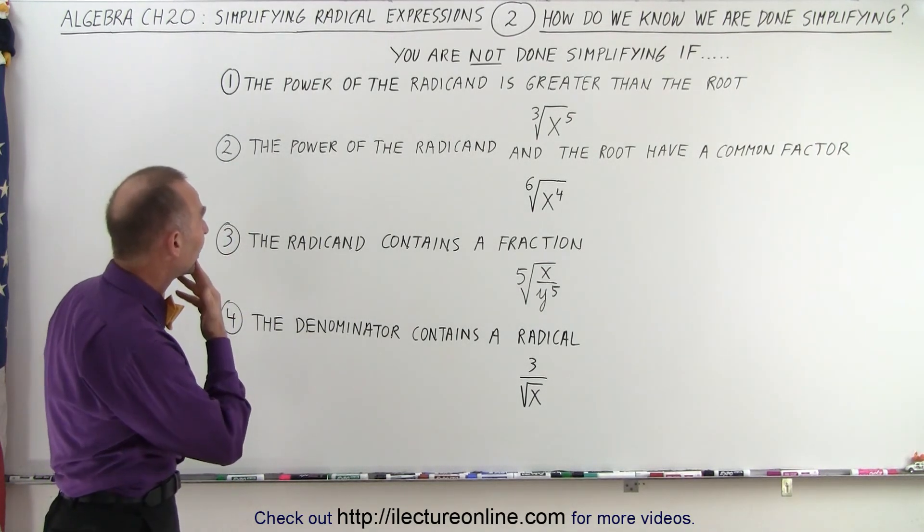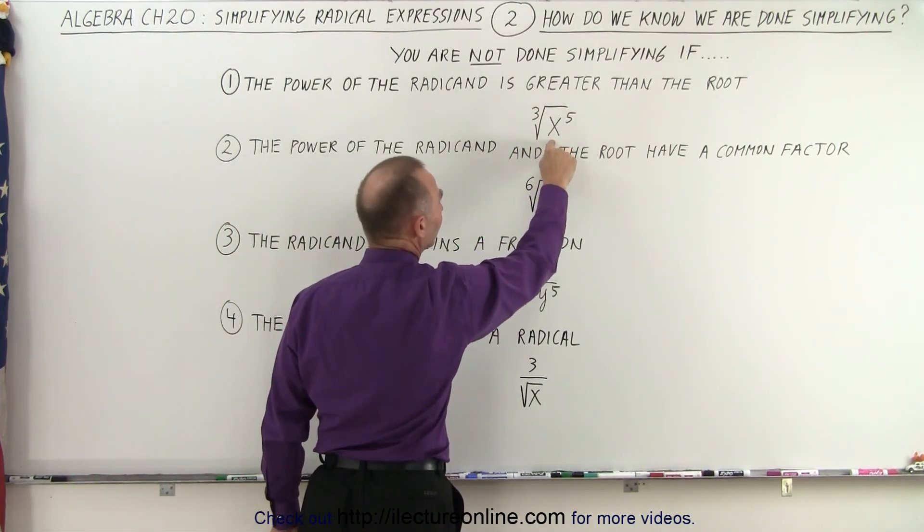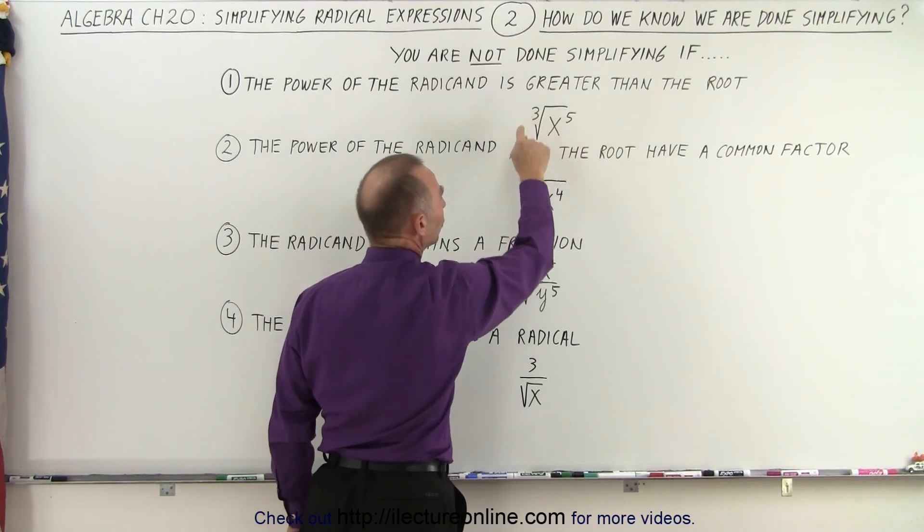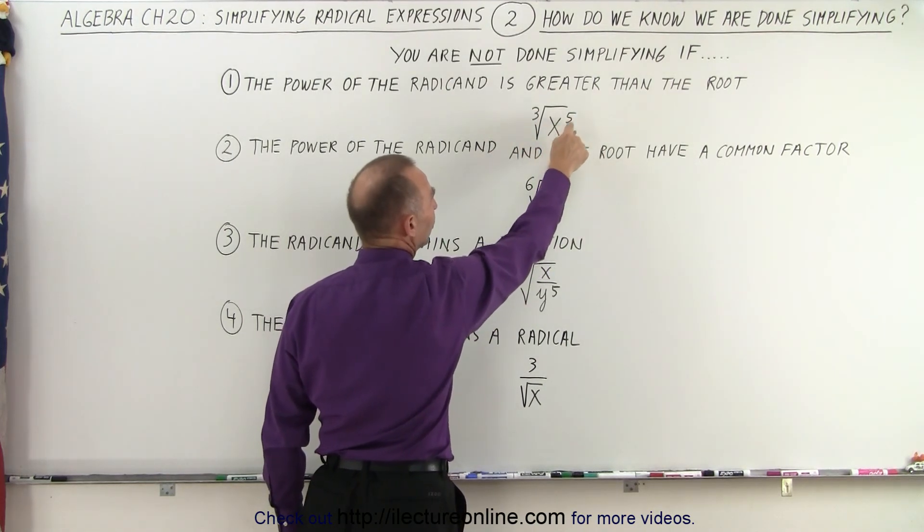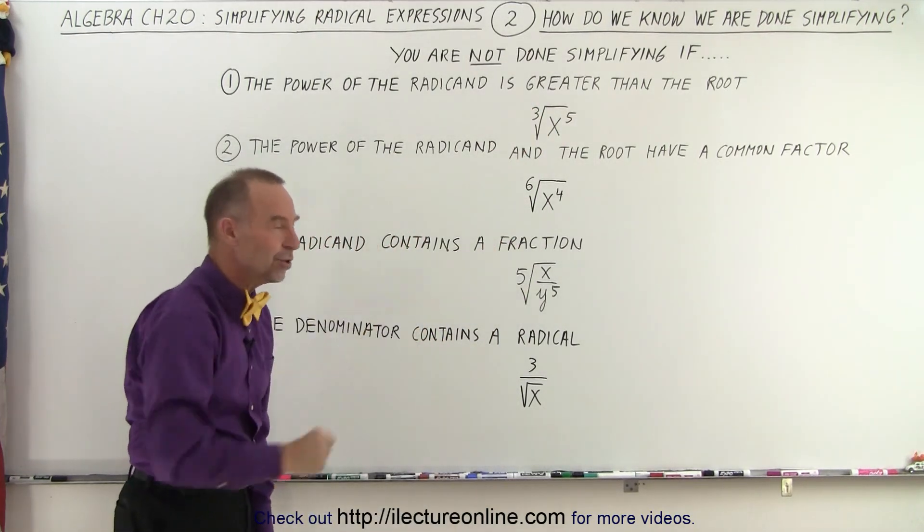The first one is that the power of the radicand, which is the power of the item inside the radical sign, is greater than the root. So, in this case, you have x to the fifth power, the five is greater than the root, so you're not yet done. You need to continue.